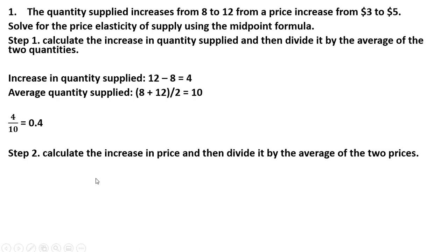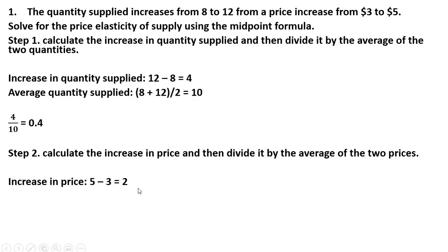The next step is to do something similar for the price variable. We calculate the increase in price: the price increased by $2 — that's 5 minus 3. And the average price is 3 plus 5 divided by 2, which is 8 divided by 2, giving us 4. Then we take 2 and divide it by 4, which gives us 0.5.